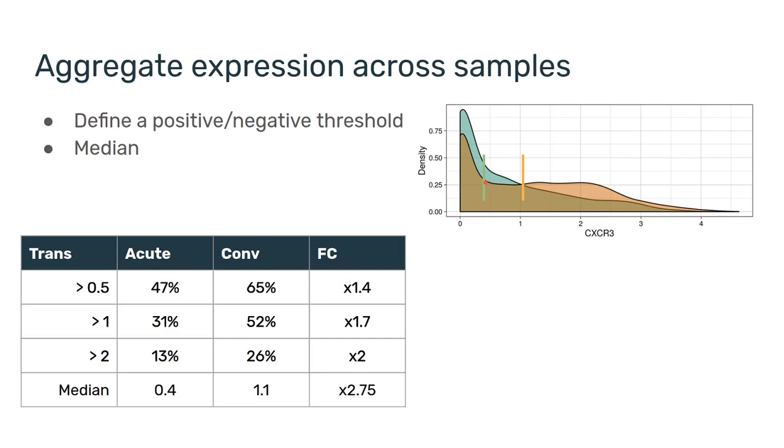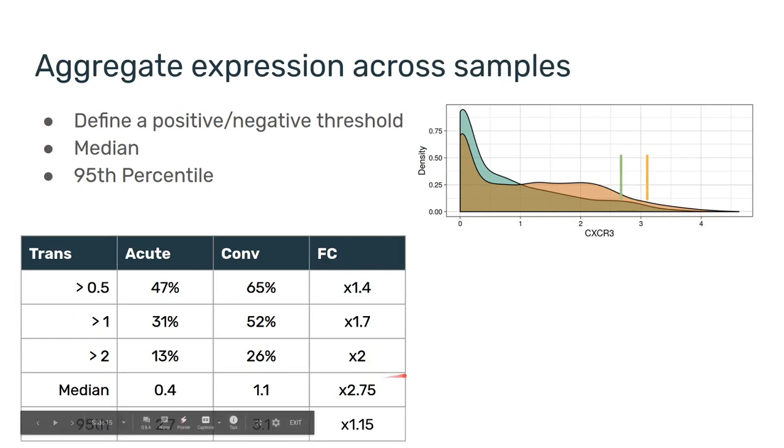However, the median is just a quantile—a quantile of 50%, to be honest—and we can choose other quantiles. And a common value that comes from flow cytometry is the 95th quantile. If you look at a bunch of flow cytometry papers, you will see that that is often chosen. And in this case, we will see a fold change of 1.14.